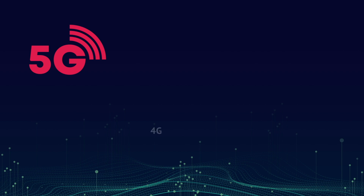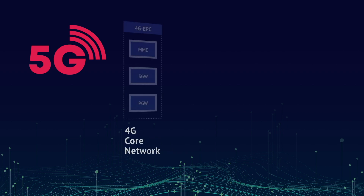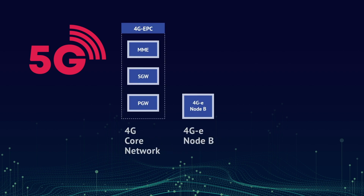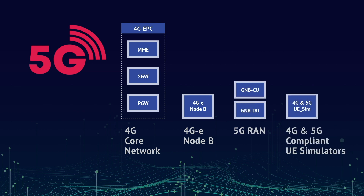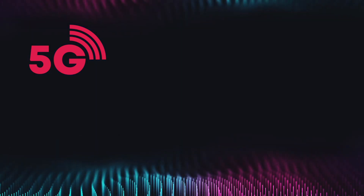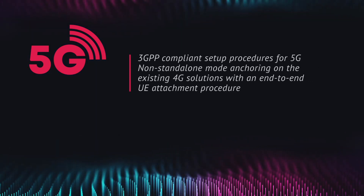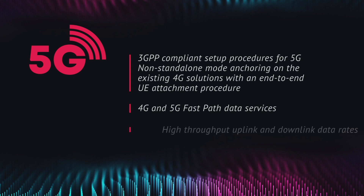The end-to-end solution consists of Radisys's 4G core network, 4G E-node B, 5G next-generation node B, and a 4G and 5G compliant UE simulator. The demonstration will showcase 3GPP compliant setup procedures for a 5G non-standalone mode anchoring on the existing 4G solutions, with an end-to-end UE attachment procedure, 4G and 5G fast path data services, and high throughput uplink and downlink data rates.